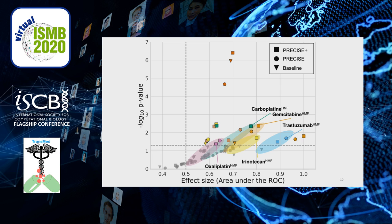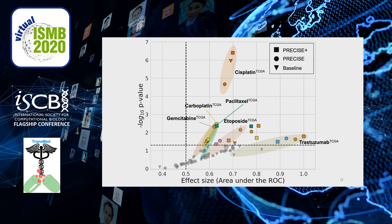For trastuzumab, PRECISE has a better association, and for oxaliplatin it is roughly similar. We also observe that all methods do much better than the baseline for all drugs. When we go to TCGA, PrecisePLUS does better than PRECISE for cisplatin, paclitaxel, carboplatin, gemcitabine, and trastuzumab. PRECISE does better than PrecisePLUS for etoposide, and PrecisePLUS does better than baseline for all drugs.